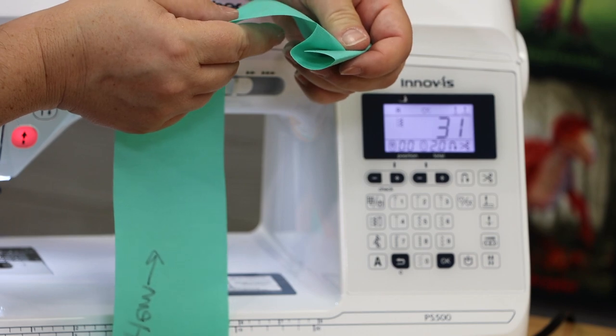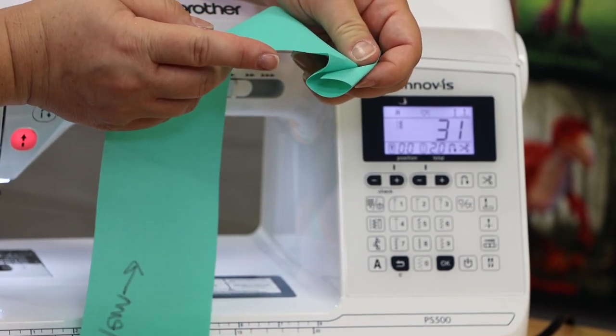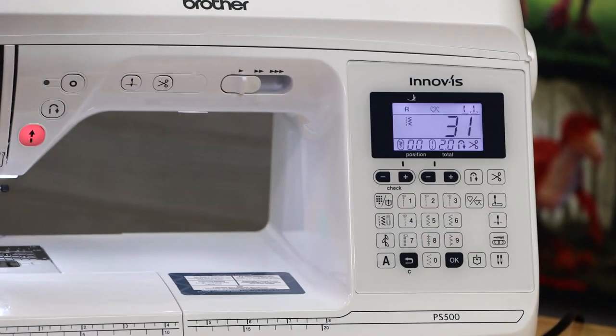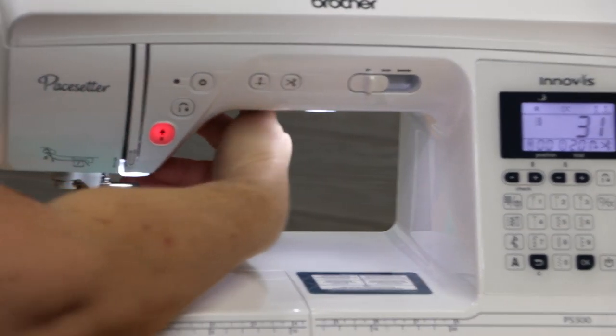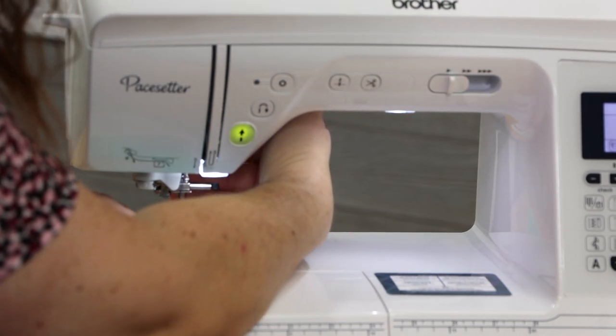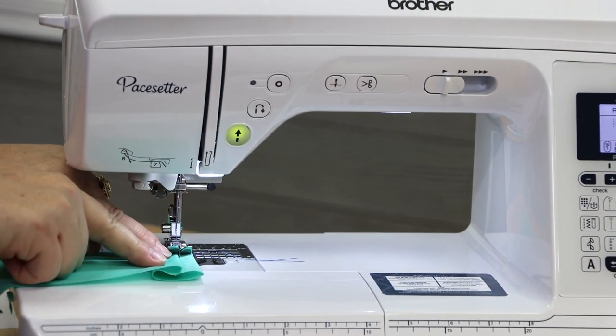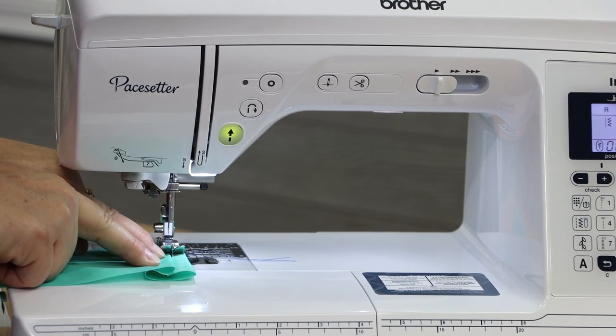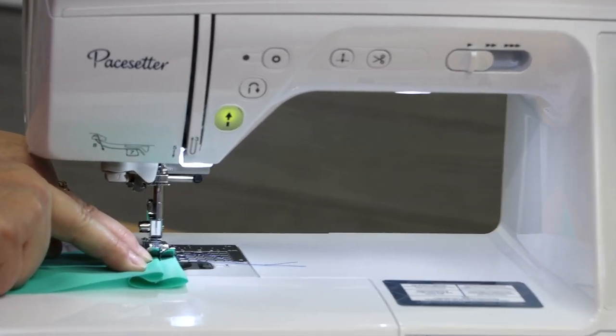And then the top layer comes down this direction and it creates a little pleat there. So again, you kind of have the letter Z on the edge of your fabric. Okay, so now once you've got that created, you're going to butt the fold of the fabric right up against the guide bar on the R foot.